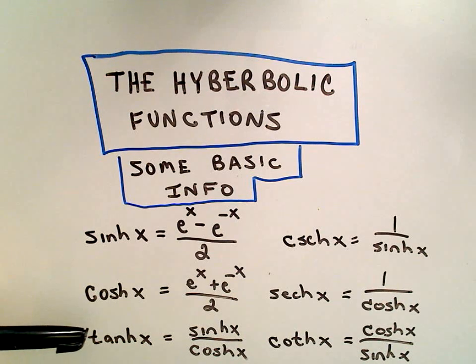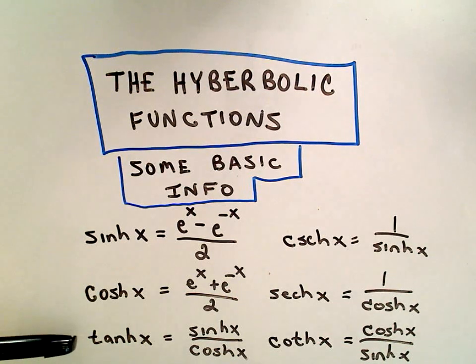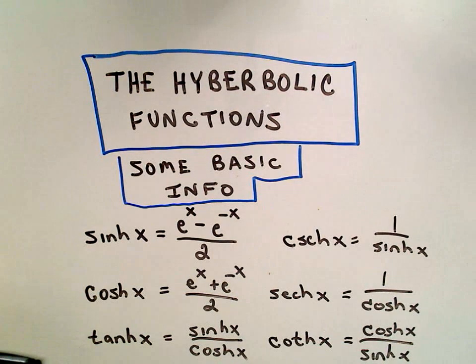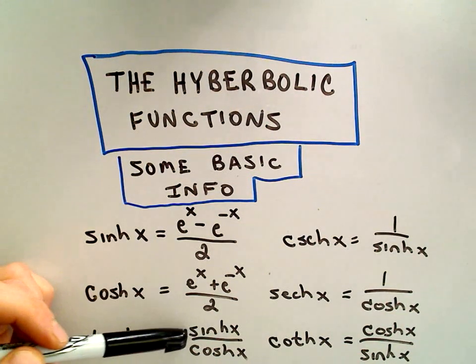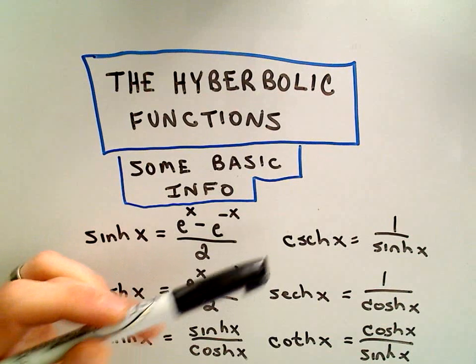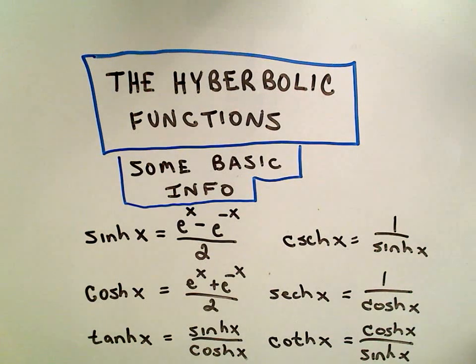And then the other hyperbolic functions are defined very analogously to the way that we define the regular trig functions. So tangent sine over cosine, well hyperbolic tangent is just hyperbolic sine over hyperbolic cosine, and ditto with the other ones.